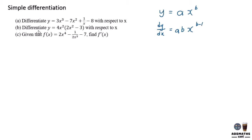Let's find question A, where we need to differentiate 3x cubed minus 7x squared plus 1 over x minus 8. Always change 1 over x to indices form, which is x to the power of negative 1, minus 8.